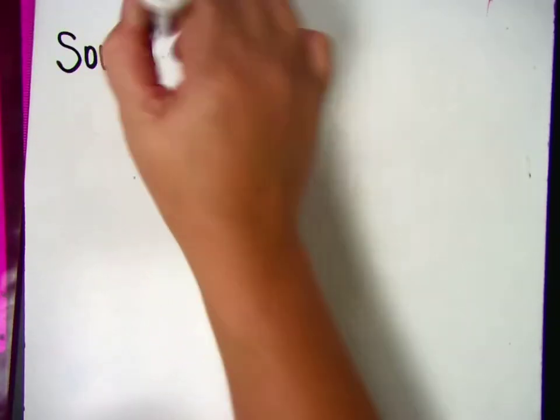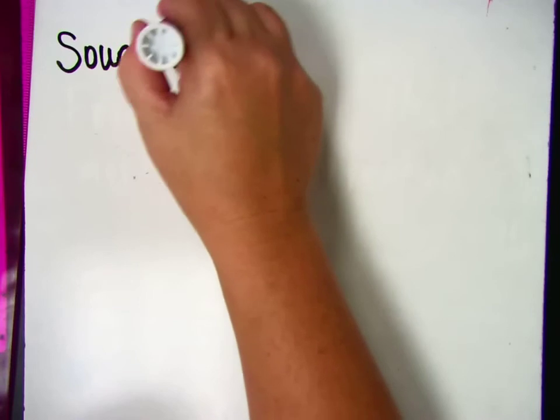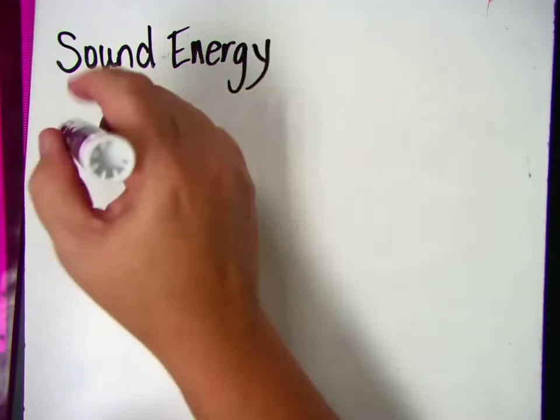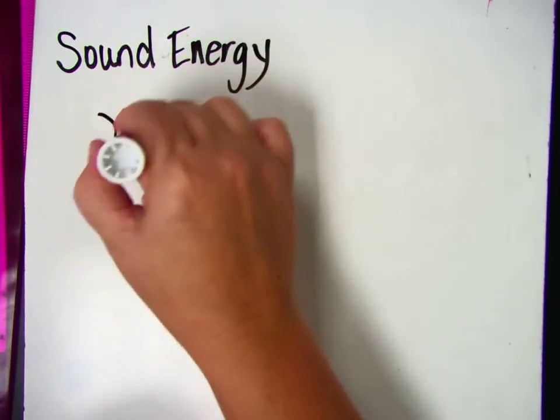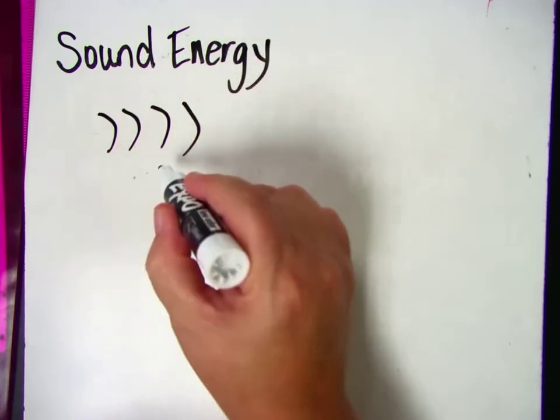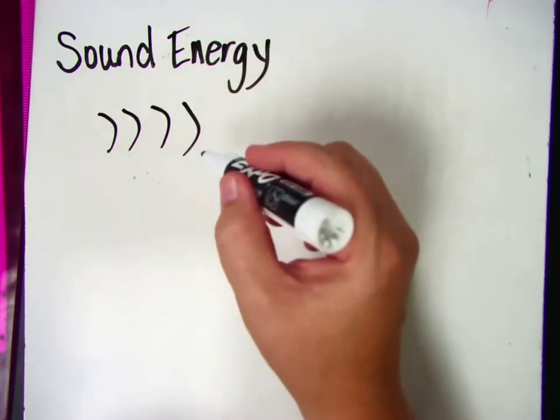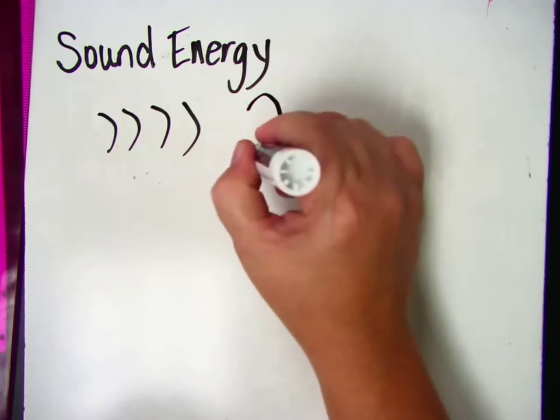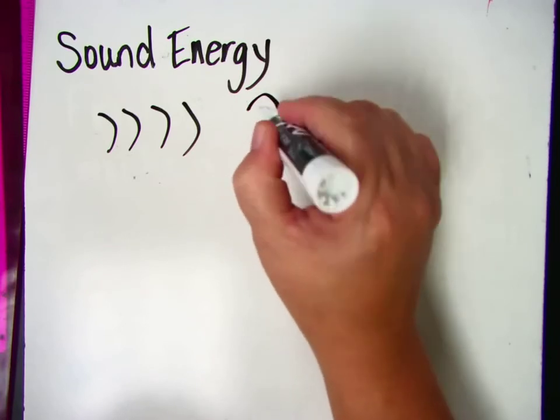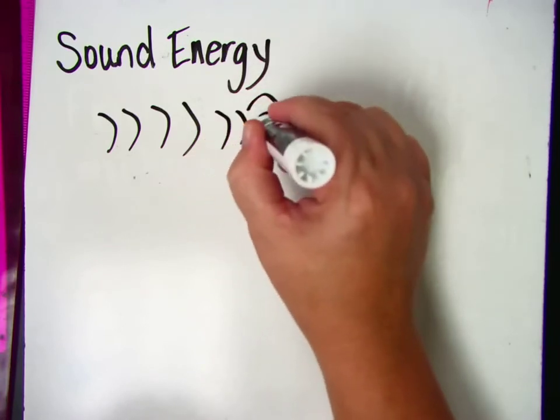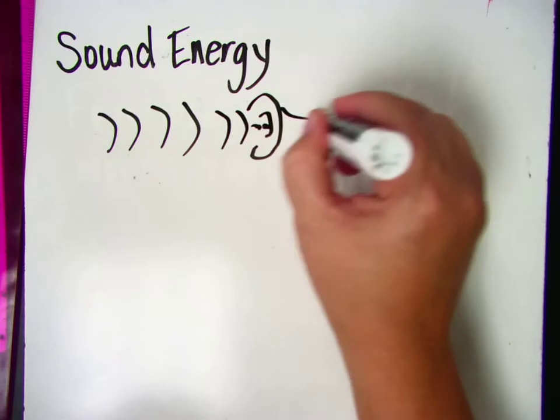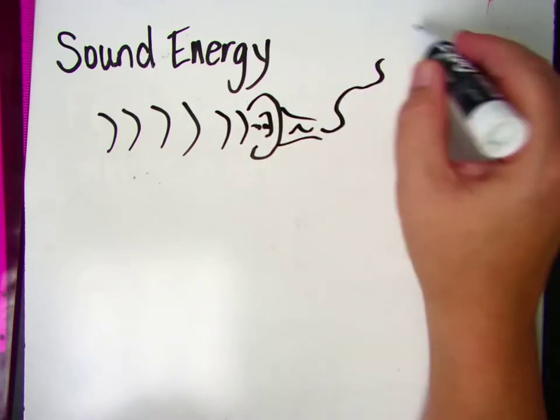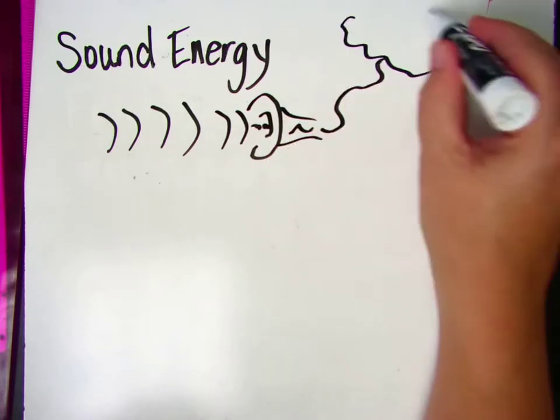Sound is heard by our ears because the waves, these are the sound waves, are actually picked up by our ears. So here's our ear. The sound wave goes into the ear and is transferred into electrical energy which goes to our brain.